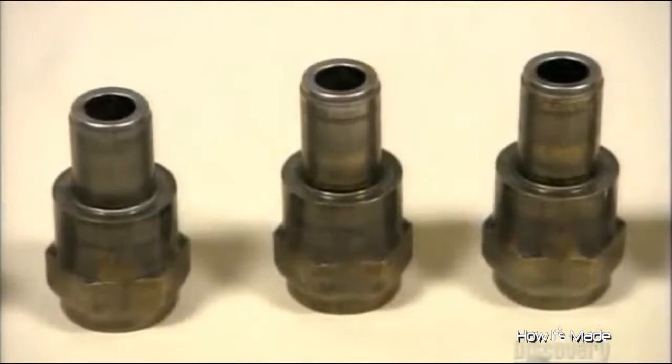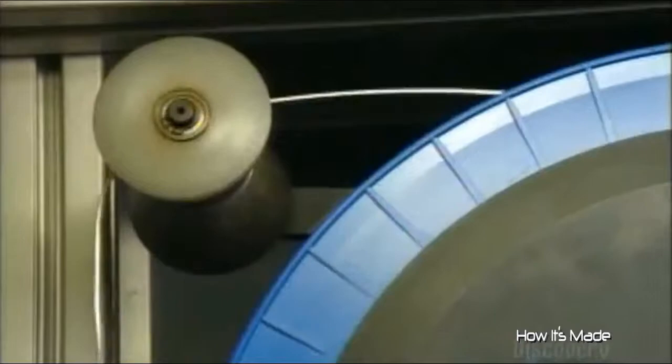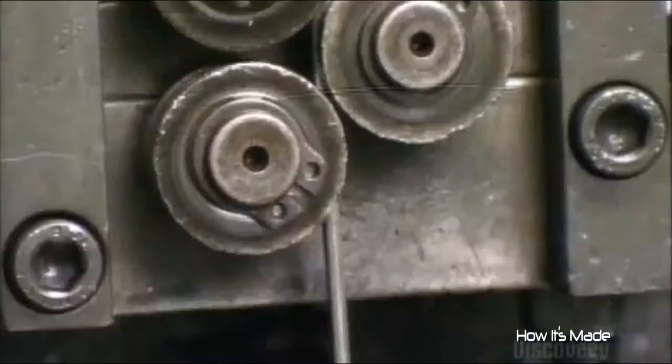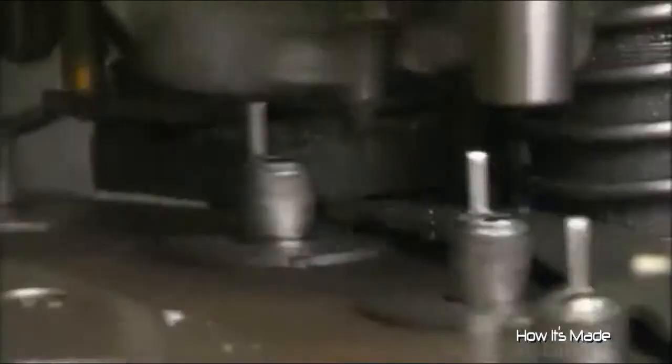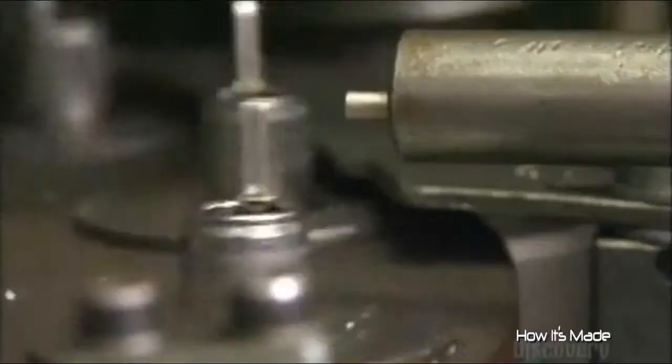A conveyor now shuttles the spark plug shells forward as nickel alloy wire unwinds overhead. An automated welder fuses the wire to the shells. This wire will serve as the spark plug's ground electrode, and it will be bent towards a firing electrode later. The space between them will contain the spark. Ridged rollers carve threads in the steel shells so they can be screwed into the engine block. The shell then gets a protective, silvery finish.